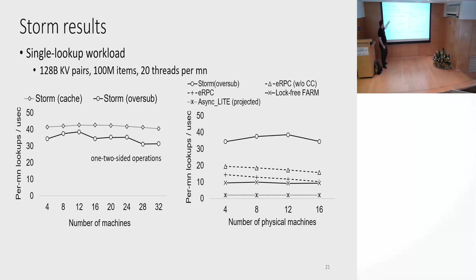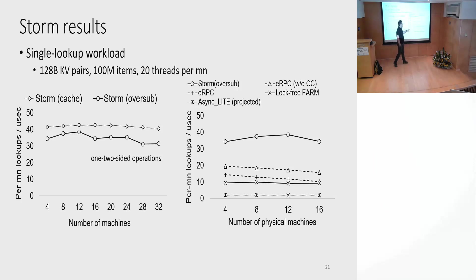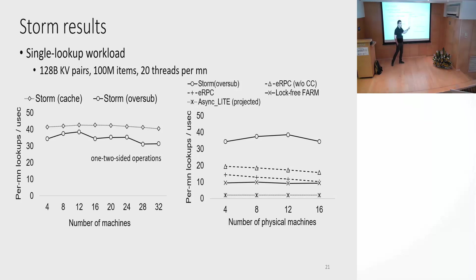Zooming in on the first 16 nodes and comparing STORM oversubscribed to eRPC, FaRM, and LITE, STORM is by far the best. The overhead of congestion control in eRPC is around 20%, consistent with what the authors report in their NSDI paper. FaRM achieves around 10 million IOPS — the issue is that larger key-value pairs produce larger buckets, wasting throughput, which is exactly what is happening here.